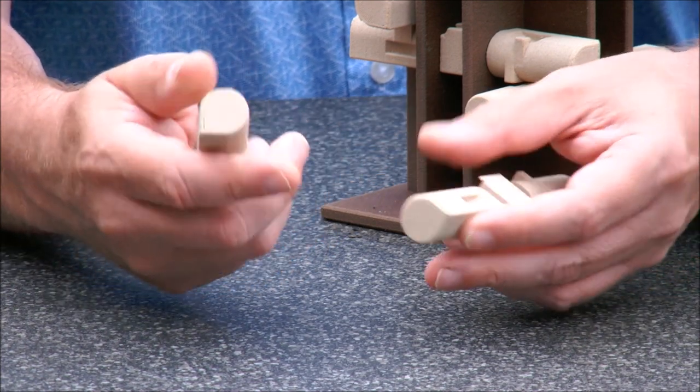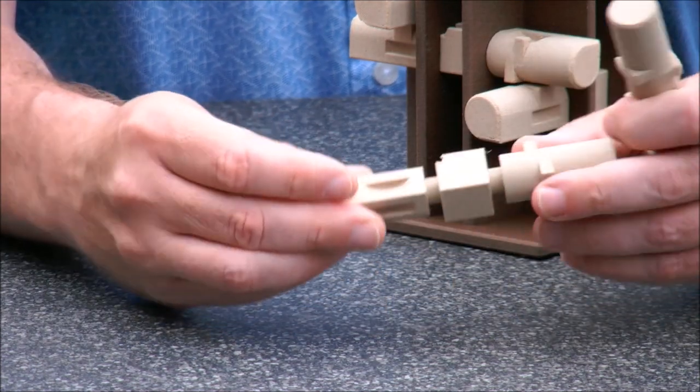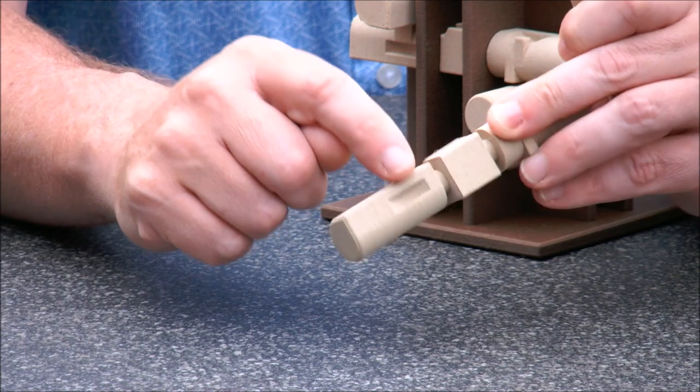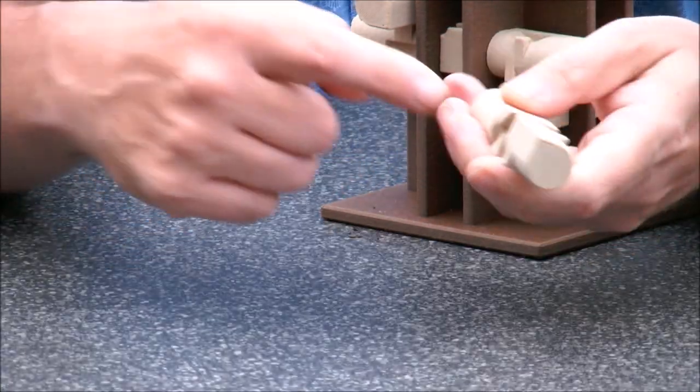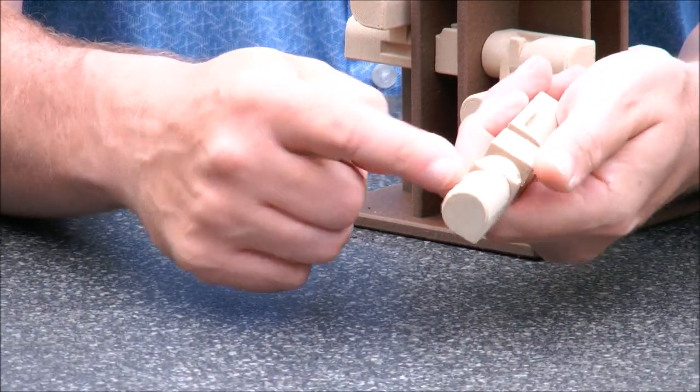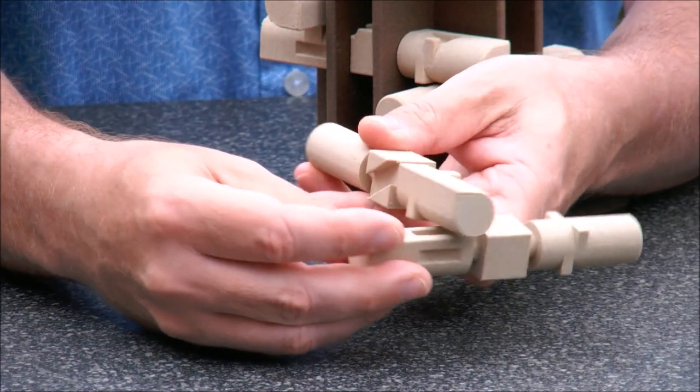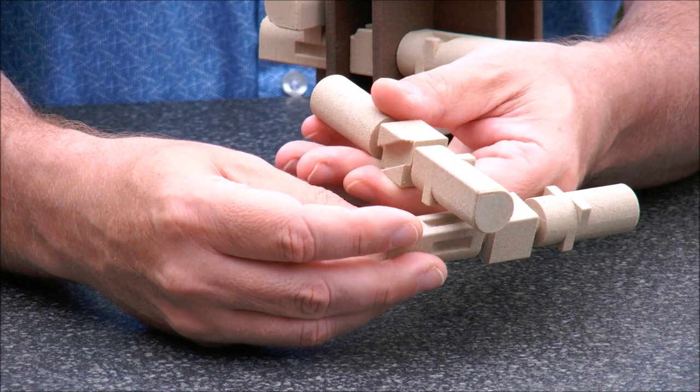So the way that the pieces interact is we have one end that has two little grooves and the other end that has some pins. And the way that they interact is a bit hard to see but I guess you understand.